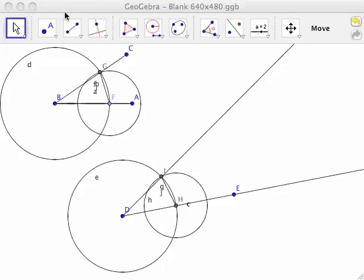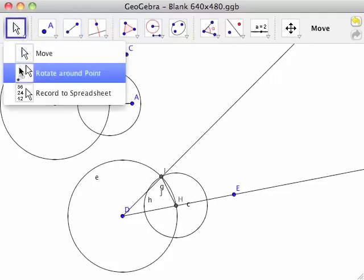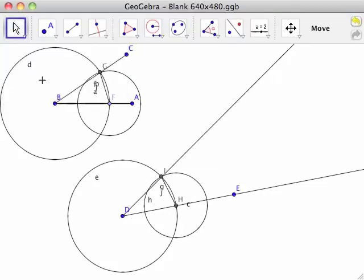Because GeoGebra is dynamic, we can see what happens when we adjust various elements of the construction. Select the Move tool from the toolbar. This tool allows for the movement of independent or semi-dependent elements in the construction.